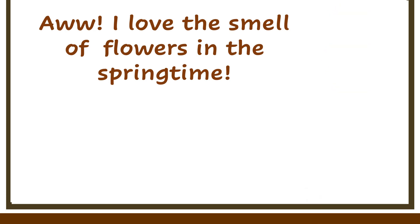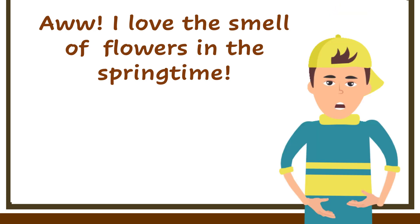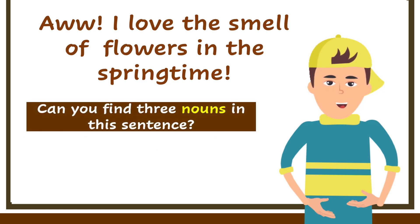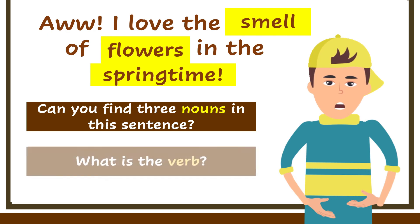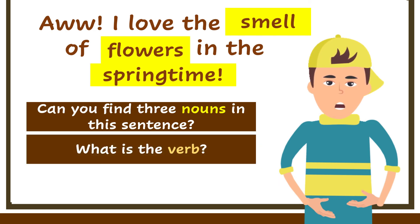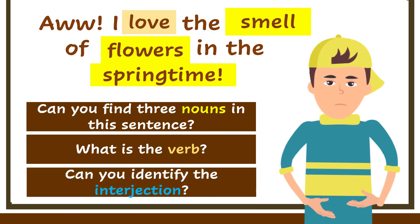Ready to check your answers? Let's look at the questions one more time. Question 1: Can you find three nouns in the sentence? Of course — the nouns are smell, flowers, and springtime. Question 2: What is the verb? The verb, or action word, is love. Now to the final question: Can you identify the interjection? Expressions that show emotions — there it is. 'Ah' is the interjection.